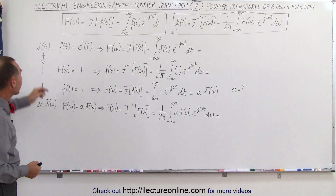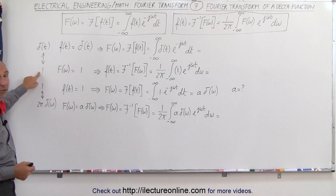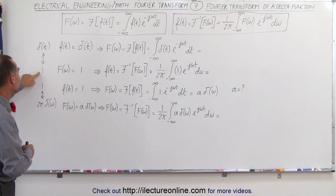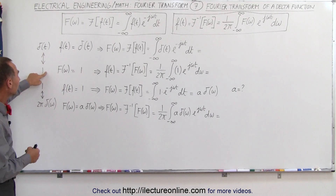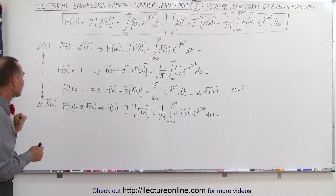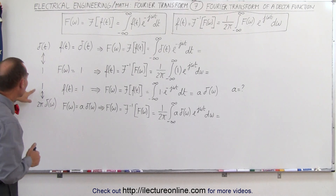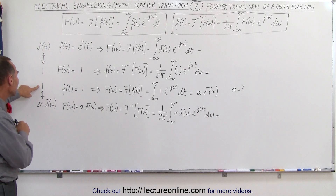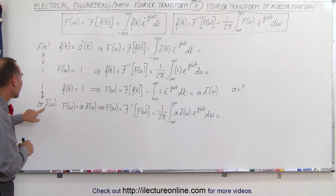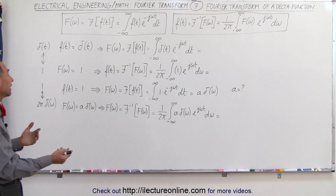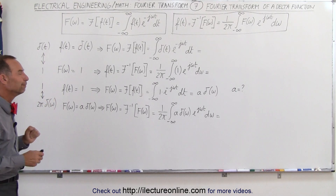It turns out that the Fourier transform of a delta function in the time domain equals 1 in the frequency domain, and the inverse Fourier transform of 1 in the frequency domain becomes the delta function in the time domain. Secondly, if we take the Fourier transform of 1 in the time domain, that becomes 2π times the delta function of the frequency in the frequency domain, and if we take the inverse transform of this we should get 1 again.